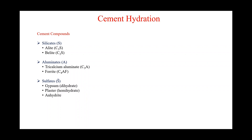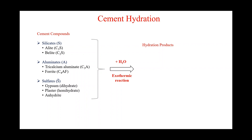When we add cement to water, a reaction called the hydration reaction occurs. This reaction is exothermic, so a high amount of heat is generated. Along with that, four different types of hydration products are formed at different stages of the reaction.